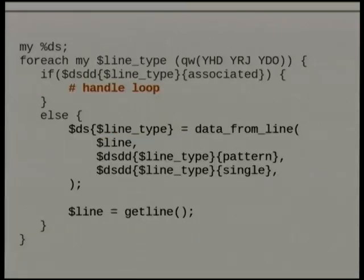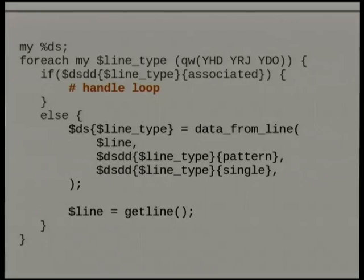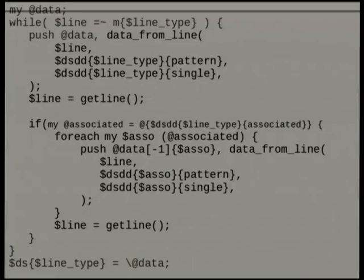And to parse that, we end up with something like this: if we have an associated thing, handle my loop; otherwise, just do the thing we expect to do. We do this in our for-each loop — this is the expanded for-each loop from before. For each line type: YHD, YRJ and YDO. We don't put YSH in here because it's a subrecord — we don't want to look up the subrecords as well. The YDO bit is going to handle that in the 'handle loop' section. And that 'handle loop' bit kind of looks like this, which is a bit longer than it should be.